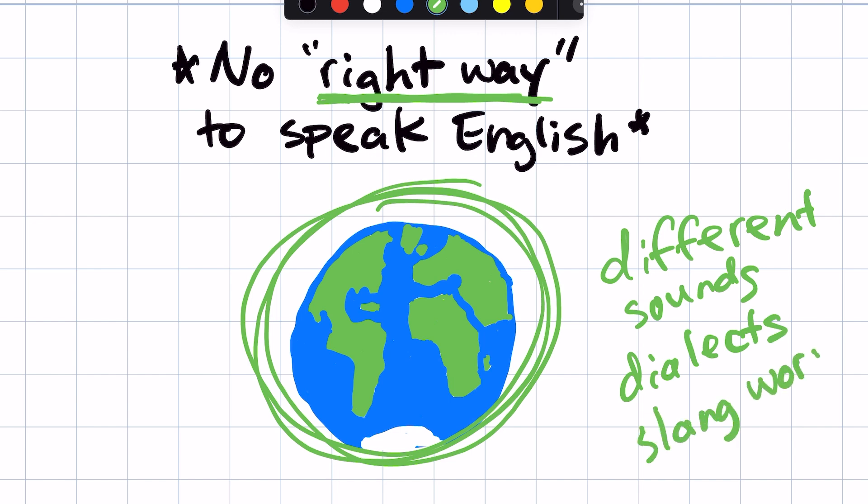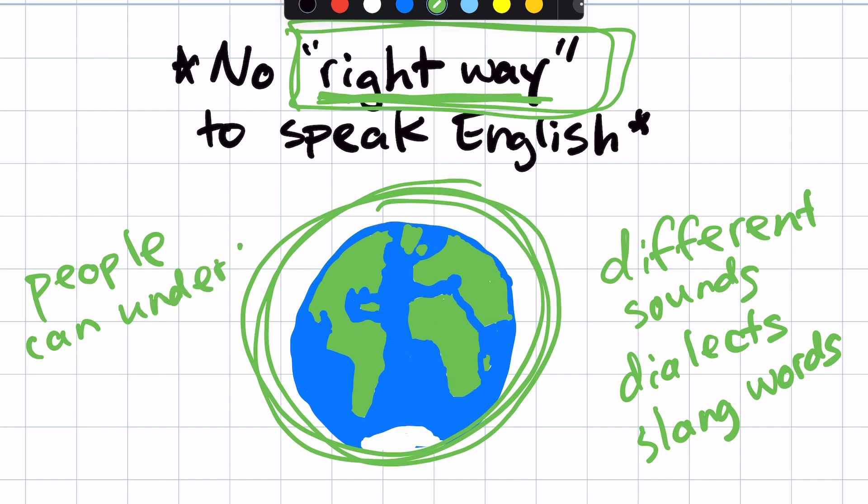However, the most important thing is that all of these people in these countries, they can understand each other. And so that's what I mean when there is no right way to speak English. And so whatever accent or way of speaking English you're trying to learn, as long as people can understand you, then that's all that matters.